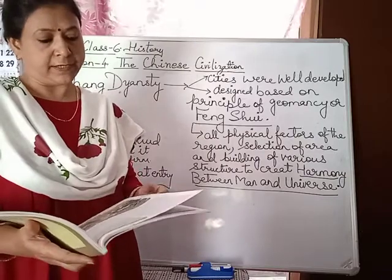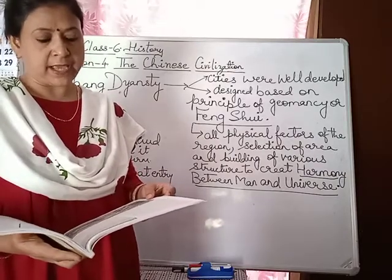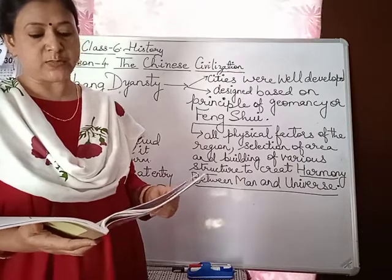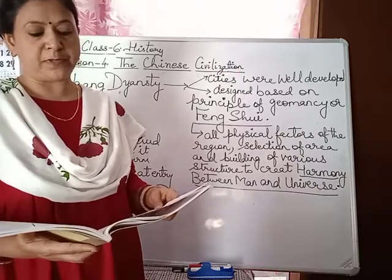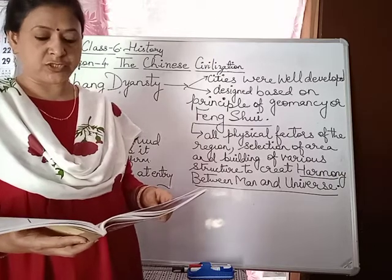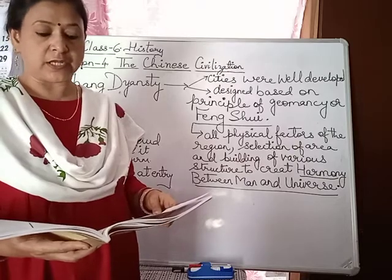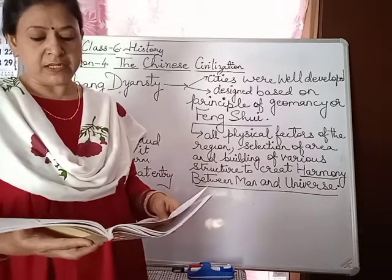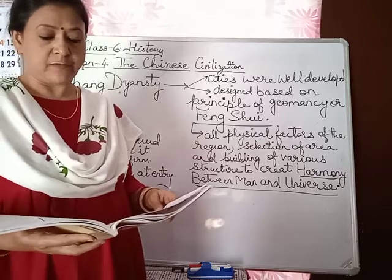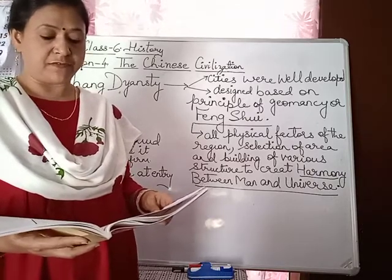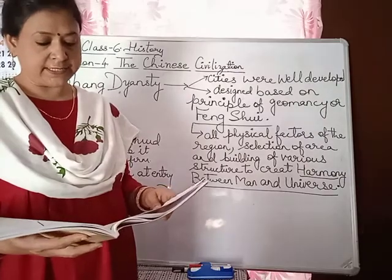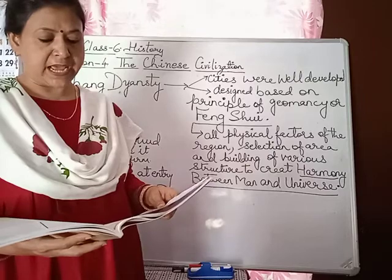Town planning. By 2000 BC, many villages had been established in ancient China, and during the Shang dynasty the earliest cities were developed. The cities were designed based on the principle of geomancy or feng shui. It involves examining all physical factors of the region, selection of area, and building of various structures to create harmony between man and universe. The cities were built with a boundary wall of rammed earth, which had gates for entry and exit. There was proper division of space within, with broad roads running north to south, cut at right angles, further dividing the city. The basic design of the city was 9-in-1 square.